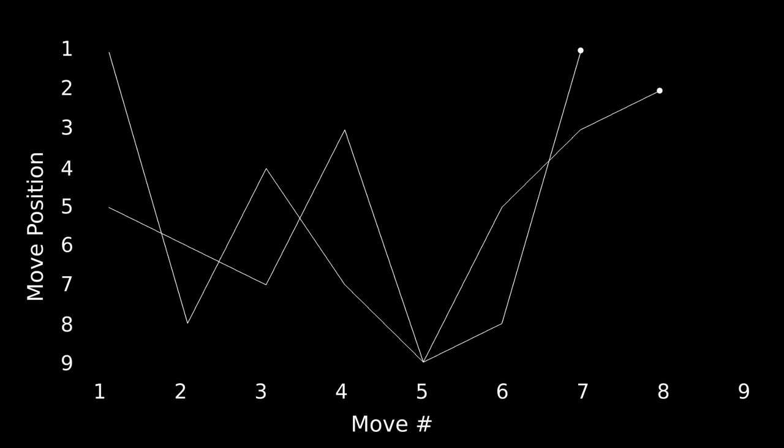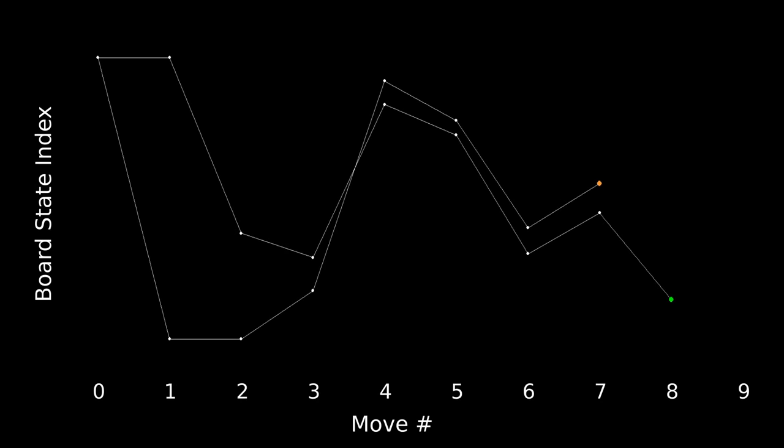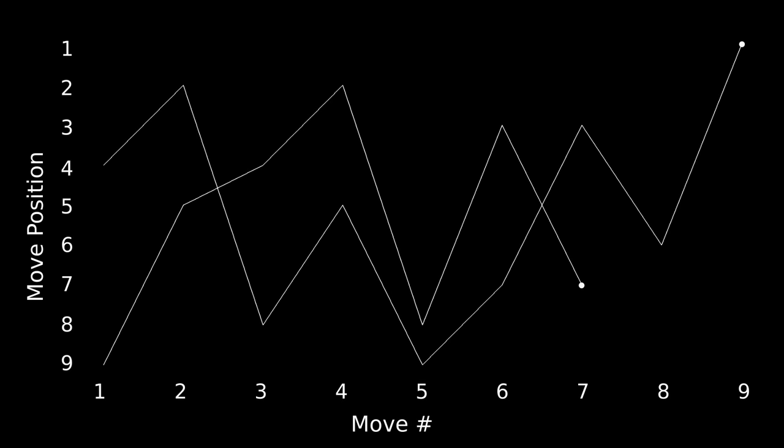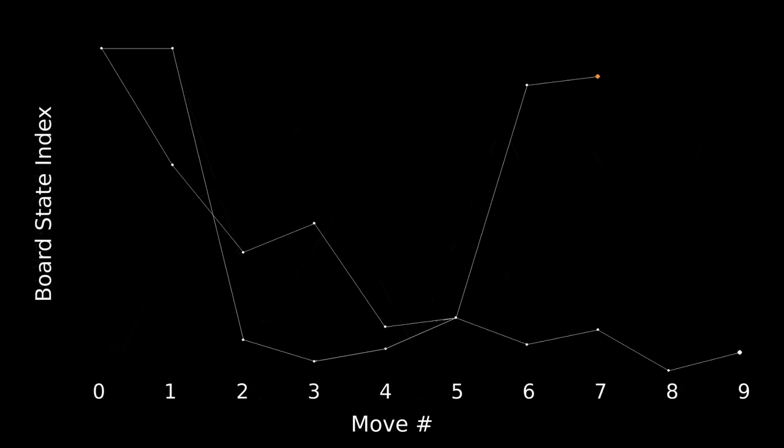So if we go back to those two games we were just looking at and plot them using board state on the y-axis, we can now see that the games are completely different from one another. On the other hand, we can see that these two games, which feature a completely different sequence of moves, share a common state on the fifth move.